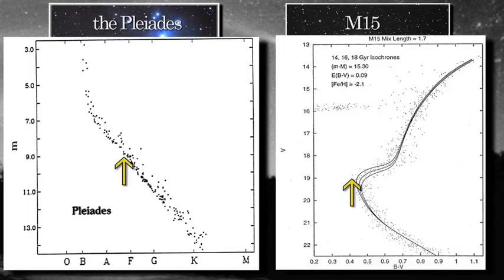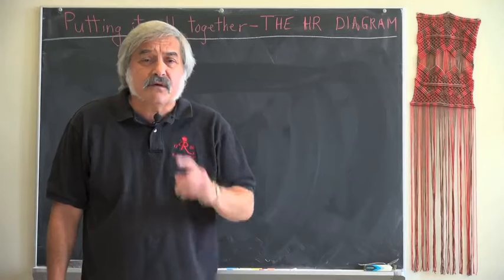Evidently, M15 is much older than the Pleiades, since all the high mass, high luminosity stars are simply not there, at least not on the main sequence. There are other clues that point in this direction as well. So now,